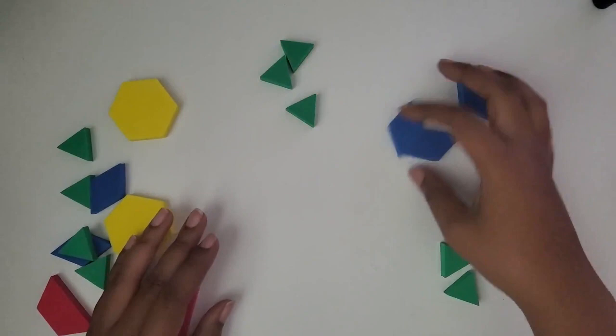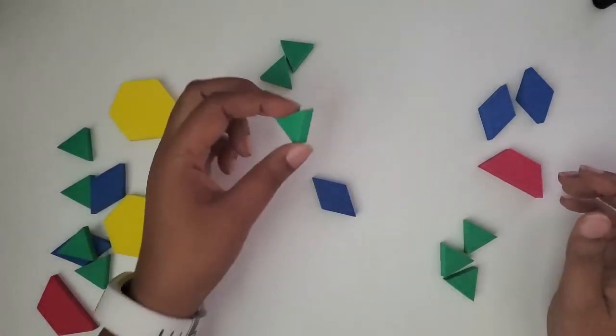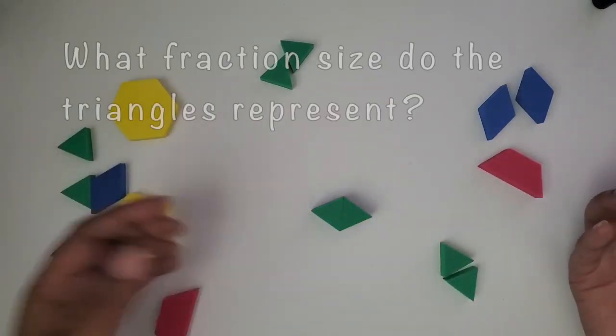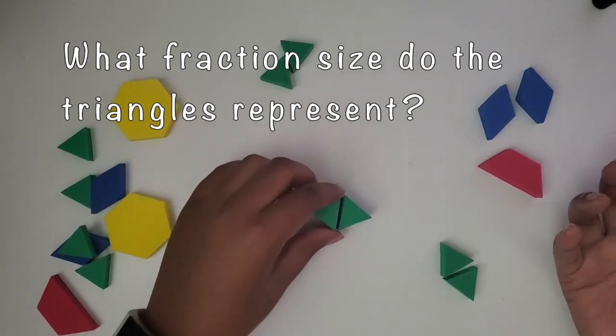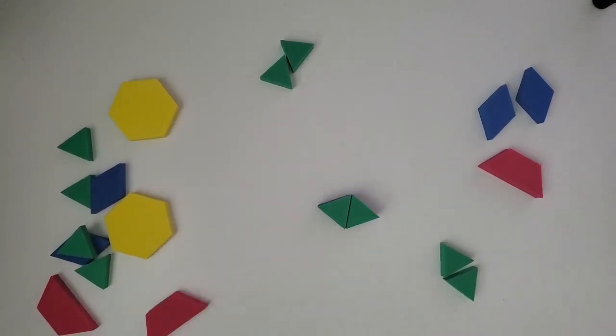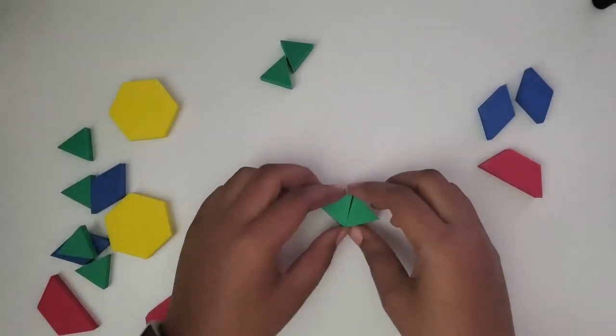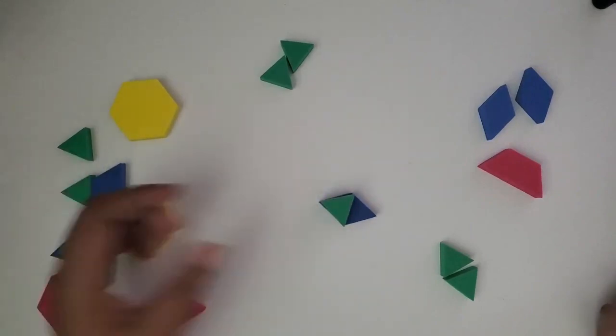Let's look at the rhombus. So if the rhombus was a whole, how many triangles would I need? Then I need two. So now what would the triangle represent? What size pieces are the triangles now?